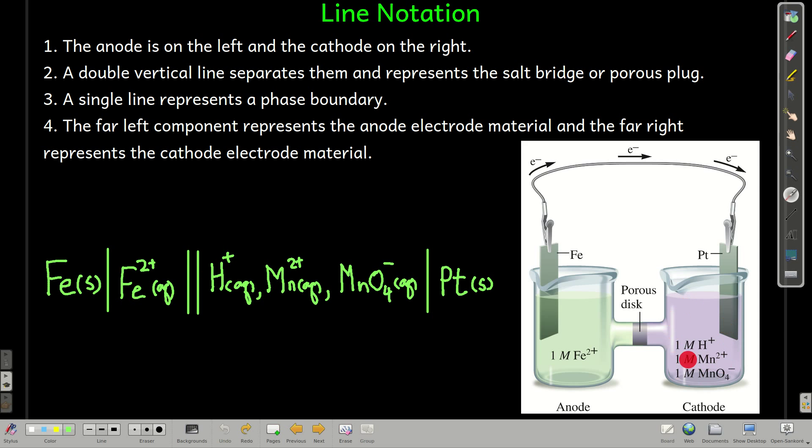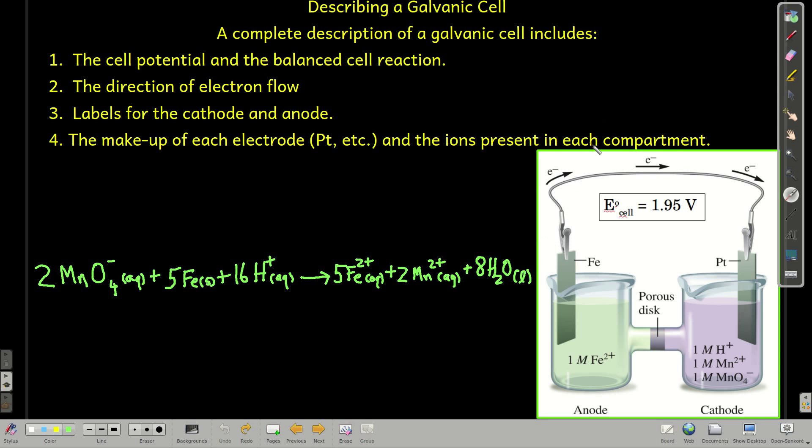Then we have our double line representing the porous plug, and then we have what's in the cathode half cell, and everything that's in there is hydrogen ion, manganese two, and permanganate in this particular example. Then we have a single line representing the phase boundary between the solution and the electrode, and then we have the anode electrode material, in this case platinum.